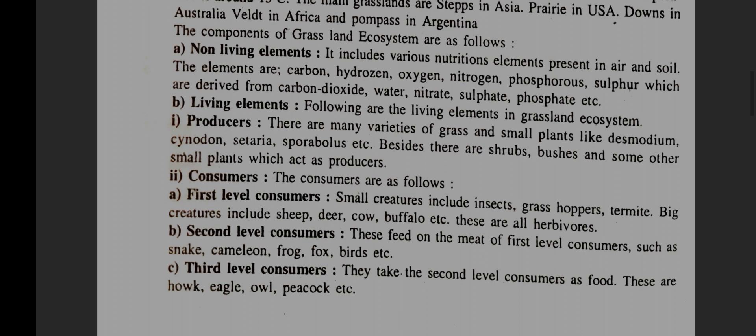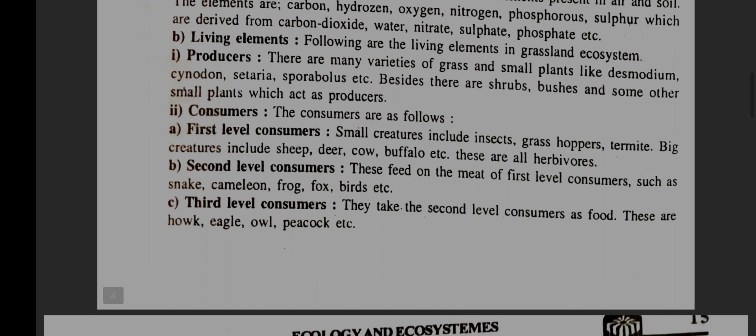Living elements — following are the living elements in grassland ecosystem. Producers: there are many varieties of grass and small plants like Desmodium, Cynodon, Cenchrus, Sporobolus, etc. Besides, there are shrubs, bushes, and some other small plants which act as producers.